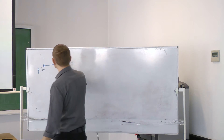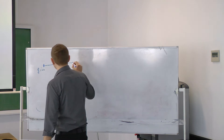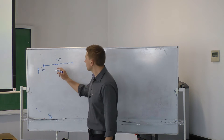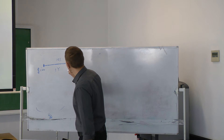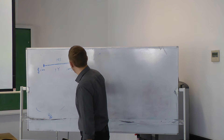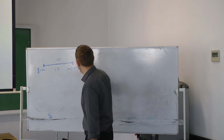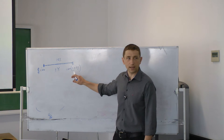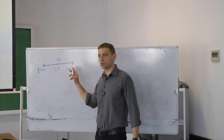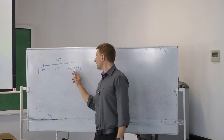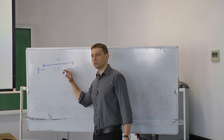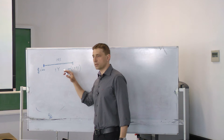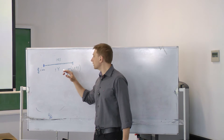Let's suppose the interest rate is 10%. What do I get after one year? 100 multiplied by 1 plus 0.1 — it's 110. This is how we calculate interest: we take the principal, which is 100, plus interest rate multiplied by the principal, which gives me 110.